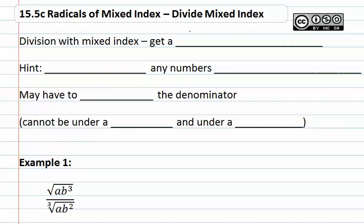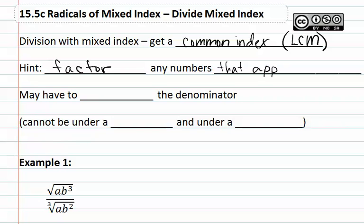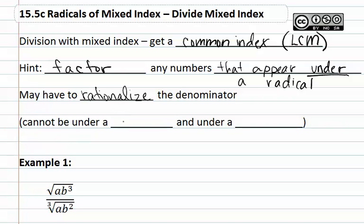To do so, you must get a common index. This is like the least common multiple or least common denominator. As an additional hint, you must factor any numbers that appear under a radical. Also, you may have to rationalize the denominator, because a radical cannot be in the denominator — it cannot be under a radical and under a fraction.